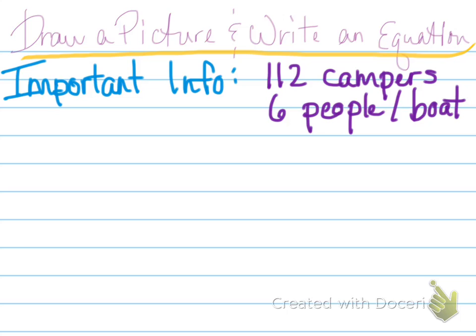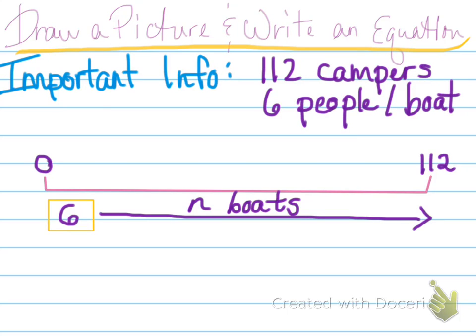So I've taken out the important information from our problem. There are 112 campers and 6 people can fit inside of a boat, so we have to figure out how many boats do we need. Here I drew a number line and I started at 0 and went to 112 because there are 112 total campers. I know that 6 people can fit into one boat, but I need to figure out how many boats is that that we will need.